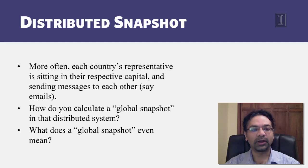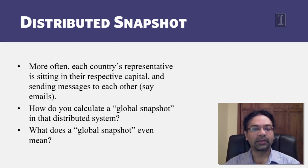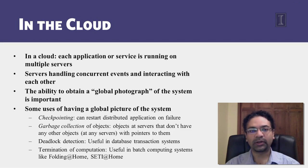What I've described is in fact a distributed system of representatives. You can think of this as being analogous to a distributed system of processes which are also exchanging messages with each other. In the cloud, for instance, you might have an application or service that is running on multiple servers. The servers are handling concrete events and interacting with each other via messages, and the ability to obtain a global snapshot of the system is really useful for detecting many kinds of properties.